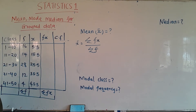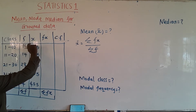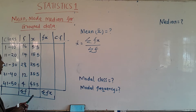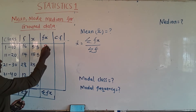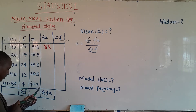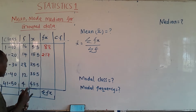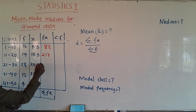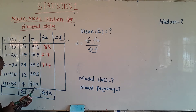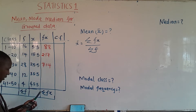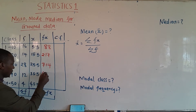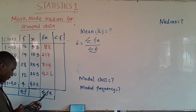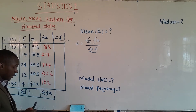We are also supposed to work out fx — the product of the frequency and the midpoint. The first is 5.5 × 16 = 88. The second is 15.5 × 14 = 217. The next is 25.5 × 28 = 714. Then 35.5 × 12 = 426. And finally 45.5 × 4 = 182.